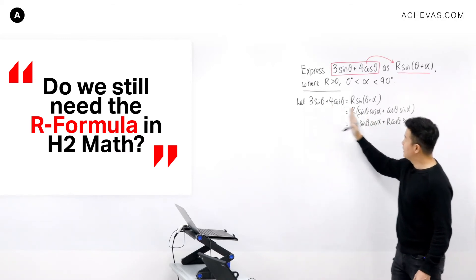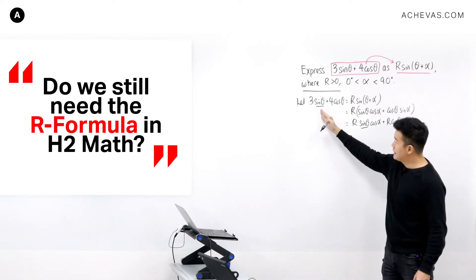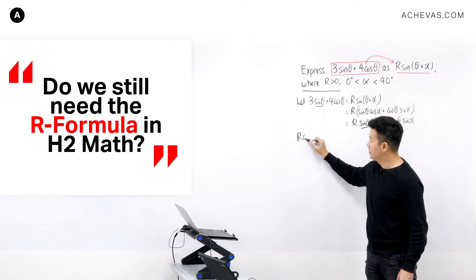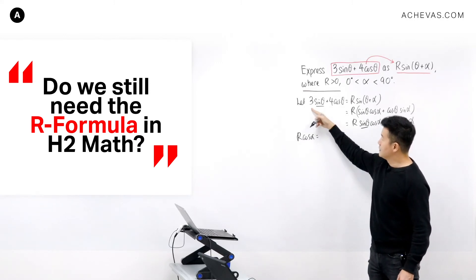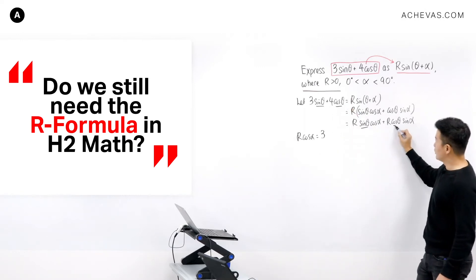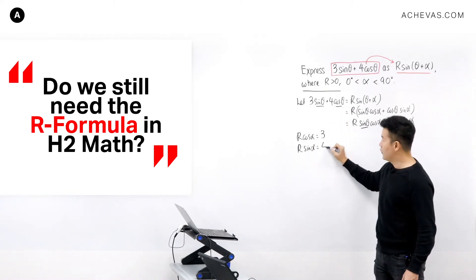And then you will realize that now they share very, very similar left and right hand side because there's a sine theta here and there's a sine theta here, which means that R cosine alpha is equal to 3. And there's a cosine theta here and there's a cosine theta here, which means that R sine alpha is equal to 4.